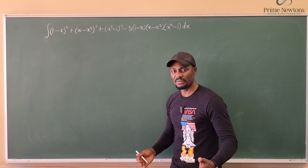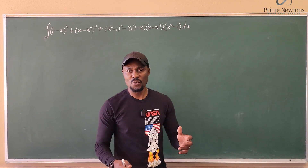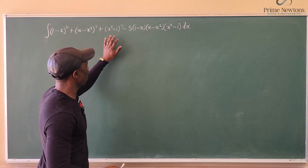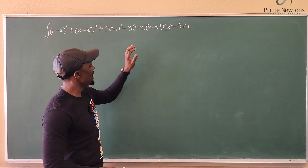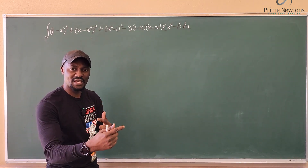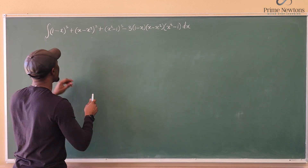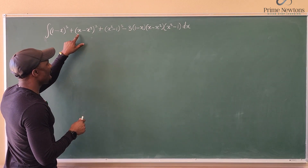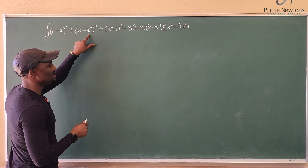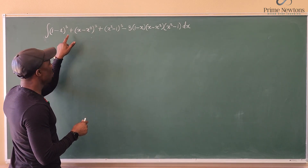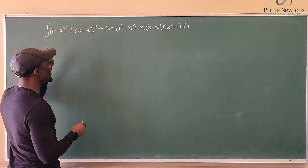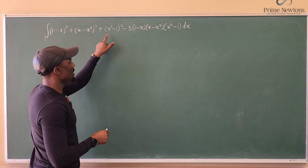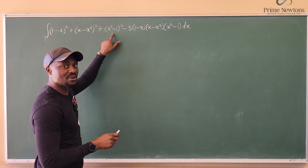My first observation is: why do I have four different terms? I can notice that there's (1-x) here, and I can see (1-x) here if I factor out x. So I see (1-x) in multiple terms.